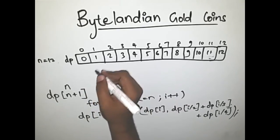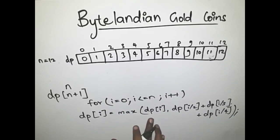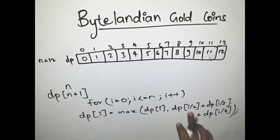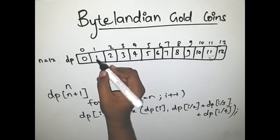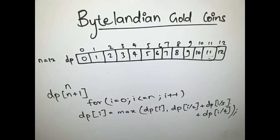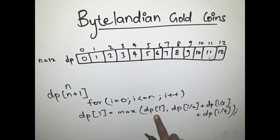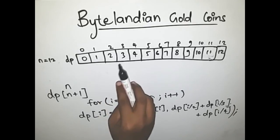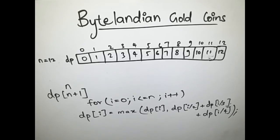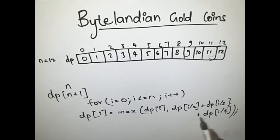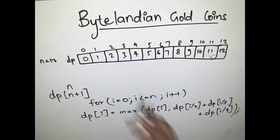When i=1, dp[1] = max(dp[1], dp[0] + dp[0] + dp[0]) = max(1, 0) = 1, so it stays as 1. When i=2, we get max(2, dp[1] + dp[0] + dp[0]) = max(2, 1) = 2, so 2 remains. When i=3, we get max(3, dp[1] + dp[1] + dp[0]) = max(3, 2) = 3, so 3 remains as it is.